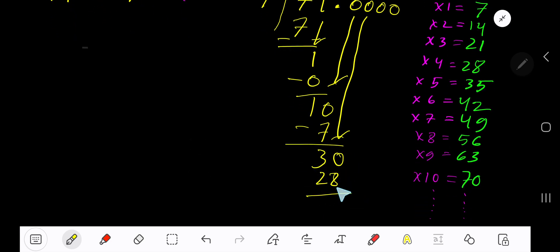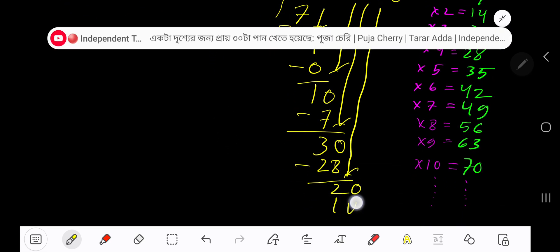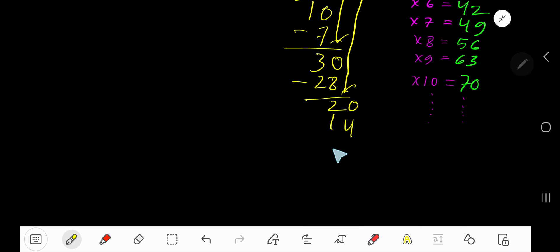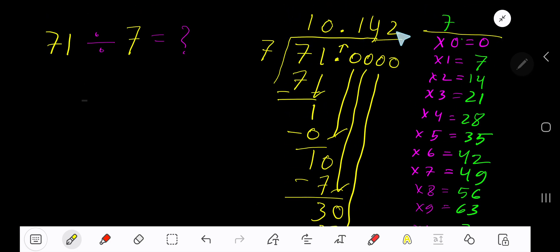Bring down another 0. 7 goes into 20 how many times? 3 times 7 is 21, which is too big, so two times. 2 times 7 is 14. Subtract to get 6. You can bring down more zeros, but since we have three places after the decimal, place three dots here. This means the process is continuing. So 10.142 dot dot dot is the answer.